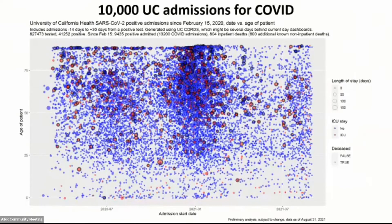Let's dive into COVID for a moment. Here's one of my favorite data visualizations: the first 10,000 COVID admissions in our hospitals. Every dot is an admission with a SARS-CoV-2 positive patient. The x-axis is time, the y-axis goes from oldest patients at top to youngest at bottom, red indicates death, and a black circle means part of the stay was in the ICU. You can clearly see where the surges are, that older patients died, and that most who died had an ICU episode.